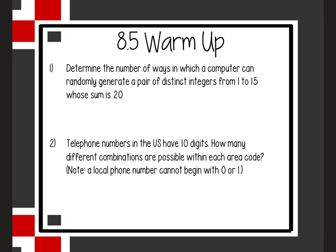Number one says: determine the number of ways a computer can randomly generate a pair of distinct integers from 1 to 15 whose sum is 20. A couple of important terminology here. One is 'a pair of distinct,' and distinct means that they are different — you can't pair two of the same number together. From 1 to 15 means we include both 1 and 15.